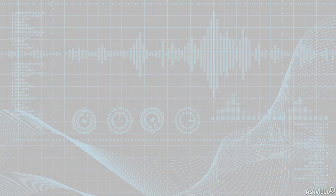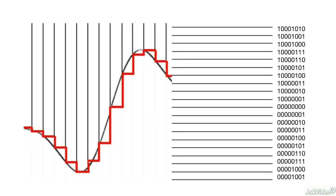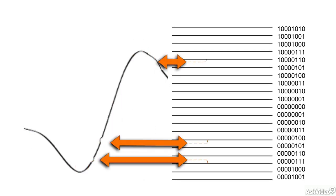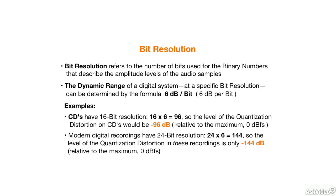As I mentioned in the previous tutorial, quantization distortion — the byproduct of analog-to-digital conversion — is present in all digital recordings. It's always at a consistent, low level based on the bit resolution of the recording. Most digital audio nowadays is recorded at 24-bit resolution, where the quantization distortion is not really an issue.